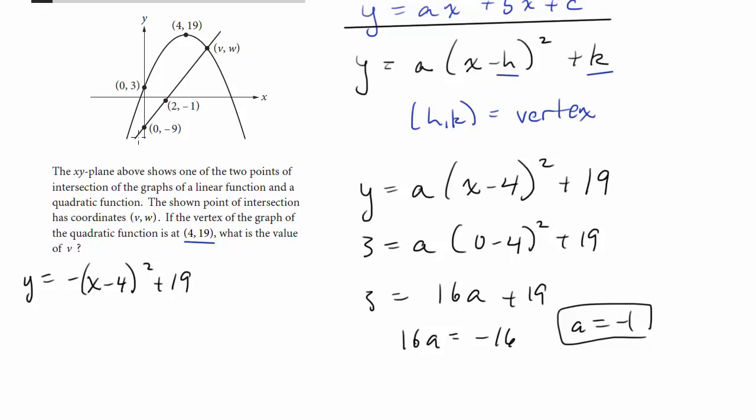Next, we need to get the equation of the line, because when we have the equation of the line, we can then set these two equal, the equation of the line and the equation of the quadratic, to then find the point of intersection, or the points of intersection. So how do we find the equation of this line? We have two points.